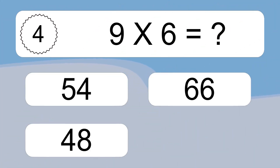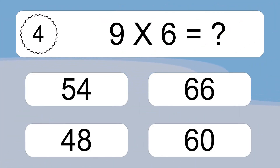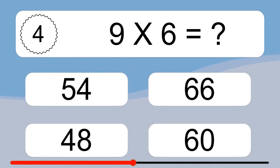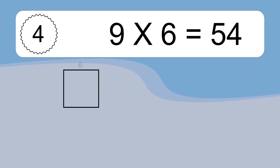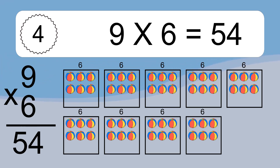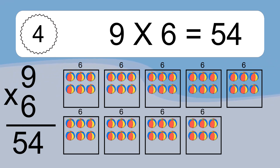9 times 6 equals what? We have 9 boxes, and each box has 6 colorful balls inside. If you count all the balls in all the boxes together, you will have 9 times 6 balls. This equals 54 balls.